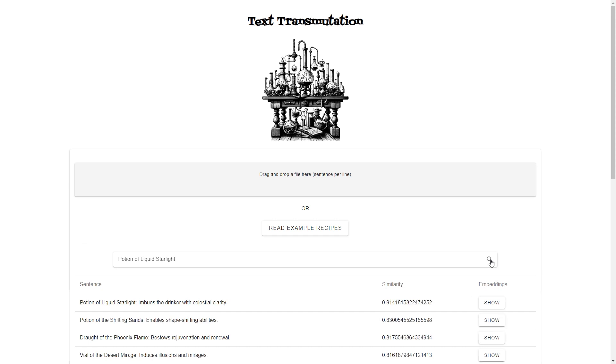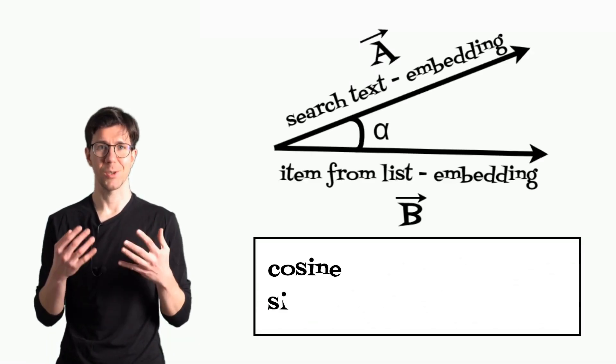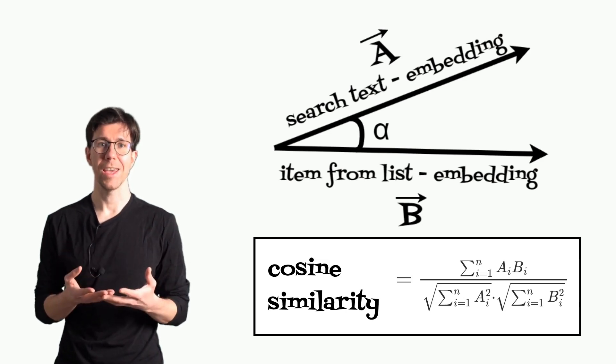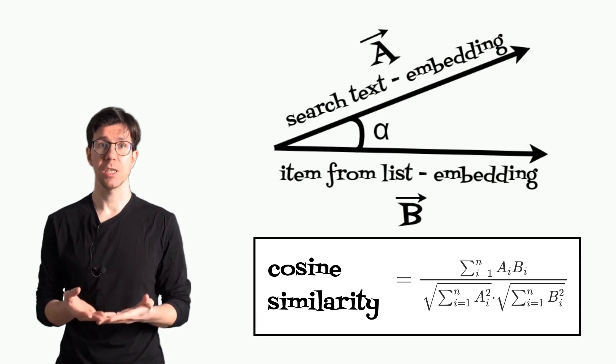To do this we'll use cosine similarity. Cosine similarity measures the cosine of the angle between two vectors offering a way to judge how similar two texts are in their semantic content.